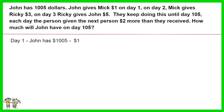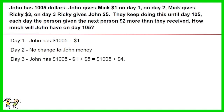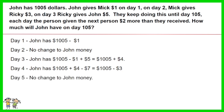On day one, John has $1005 minus one dollar. On day two, there is no change to John's money. On day three, John has $1005 minus one dollar plus five dollars, which equals $1005 plus four dollars. On day four, John has $1005 plus four dollars minus seven dollars, which equals $1005 minus three dollars. On day five, there is no change to John's money.